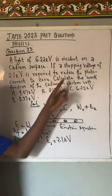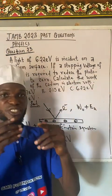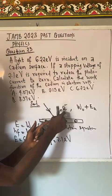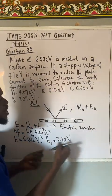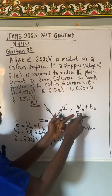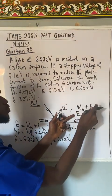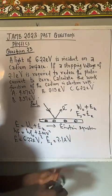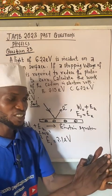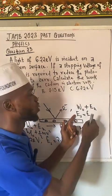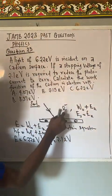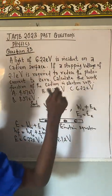What do we mean by stopping voltage? That is the amount of energy that we need to stop the electron from moving. The stopping voltage, the energy that we need to stop it, must be equal to the energy that we need to move it. So ES must be equal to EK.